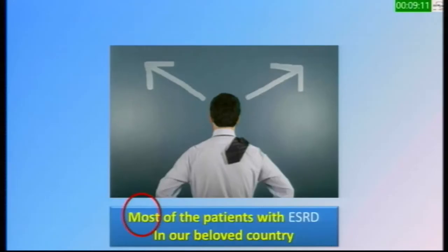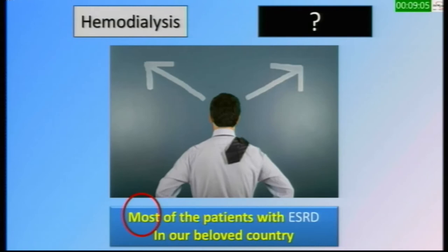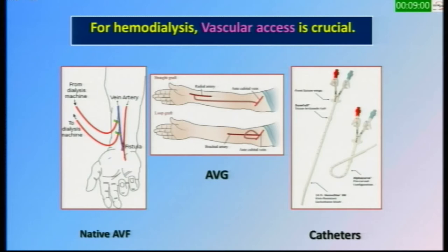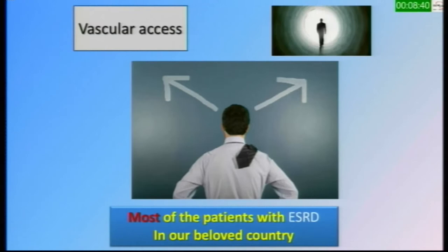Unfortunately, due to one cause or another, in our country, patients on hemodialysis outnumber those on peritoneal dialysis or transplantation. So most — and this is very important — most of the patients with end-stage renal disease in our beloved country have two options, one of which is hemodialysis. We all know that for hemodialysis, the vascular access is crucial. So most of these patients must either have a vascular access for hemodialysis as a form of renal replacement therapy, or otherwise they will be left to die.